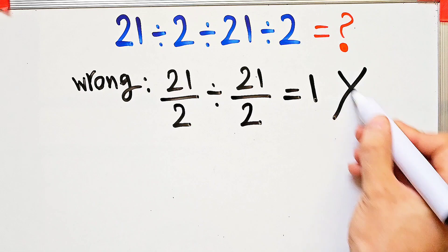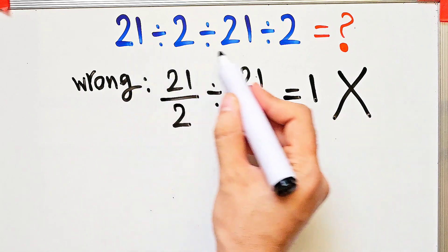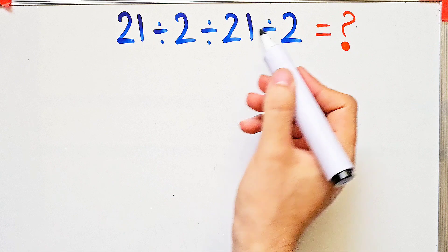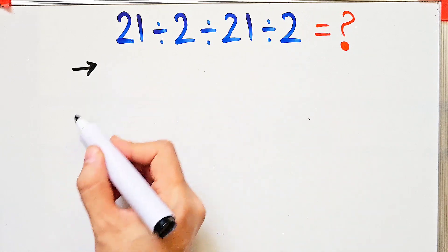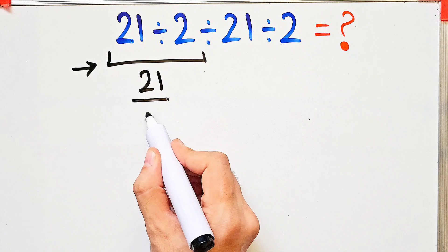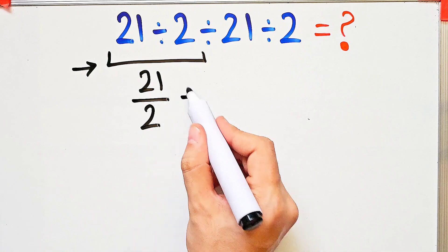Let's solve this question step by step together. Because we have three divisions, we start from the left and simplify. 21 divided by 2 equals 21 over 2. We have 21 over 2 divided by 21, then divided by 2.